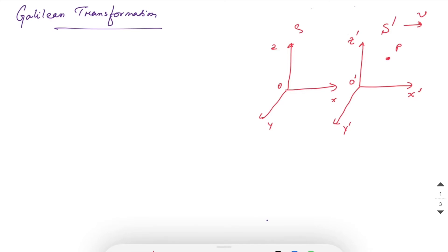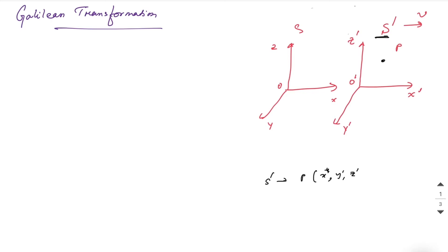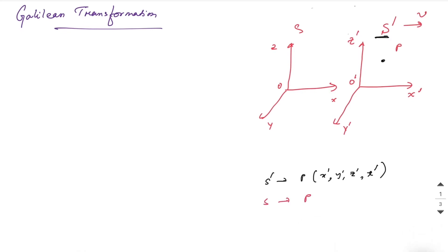This frame S' has axes x', y', z' and origin O'. We have an object P at some point. According to frame S', the position of P is (x', y', z') at time t'. According to frame S, its position is (x, y, z) at time t.